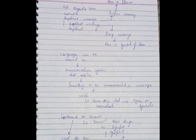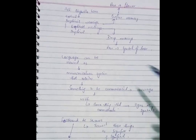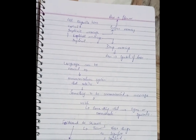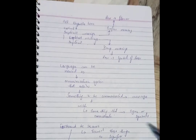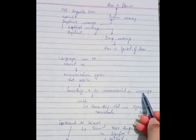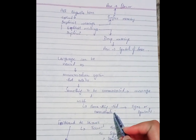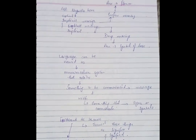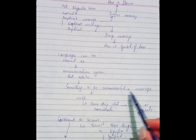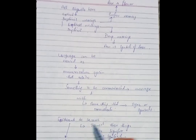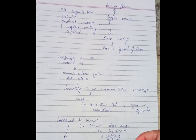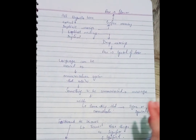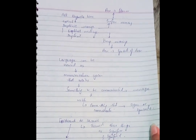Language can be viewed as a communication system because it creates a relationship between something to be communicated — the message — and something that communicates — the sign or symbol. The communication system is a relationship between the sign and the message. Ferdinand de Saussure termed these things as signifier and signified, saying that a sign creates a relationship between the signifier and the signified.